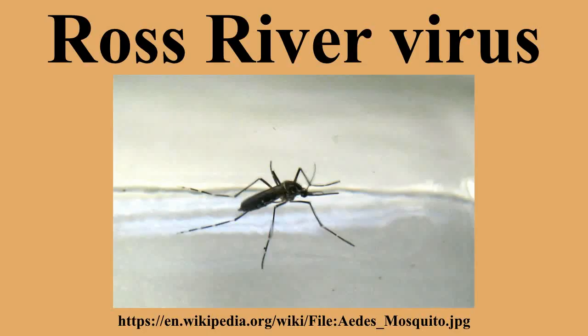Evidence shows a strong correlation between contracting RRV and living in close proximity to wetlands in the southwest of Western Australia. However, due to continuous growth and development of residential areas around these wetlands, it is expected that problems with RRV disease will continue to occur.